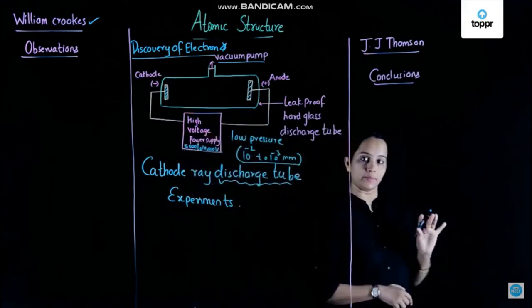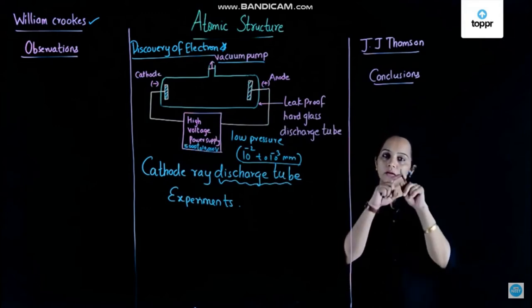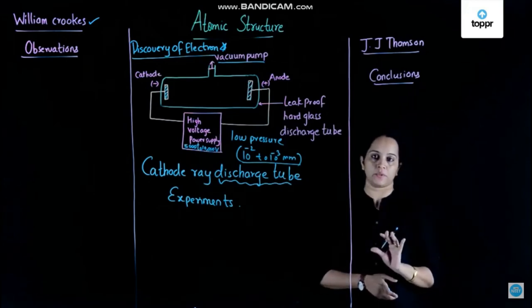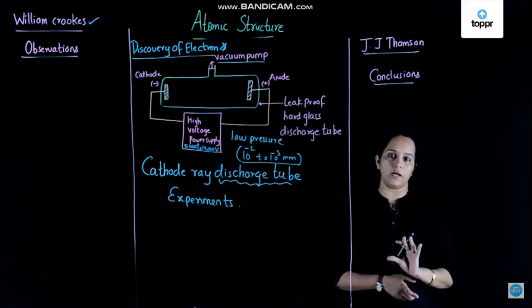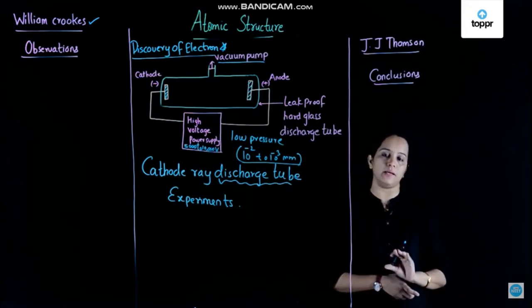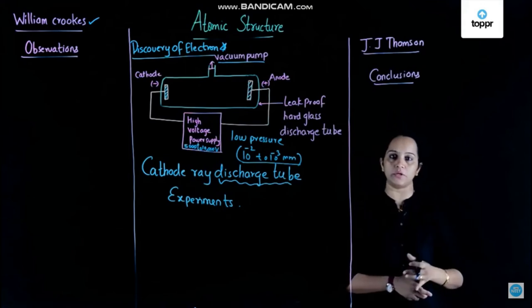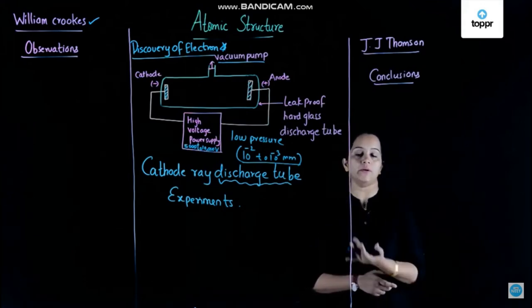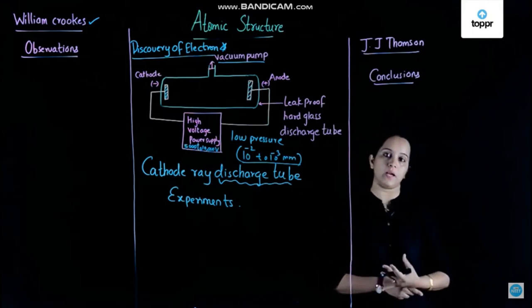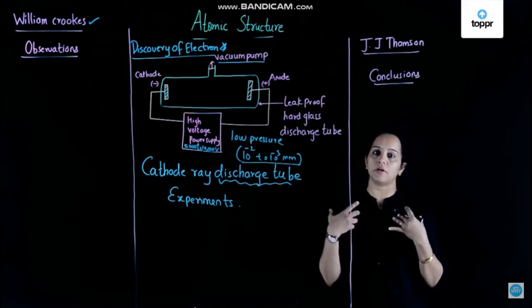So to summarize the construction: there is one discharge tube, inside which we have taken a gas at very low pressure maintained by a vacuum pump. We then introduce two metallic plates — one is cathode (negatively charged) and the other is anode (positively charged). It is connected to a very high voltage power supply of 5,000 to 10,000 volts of electric current.